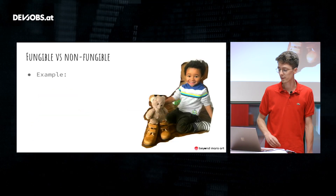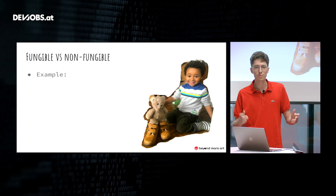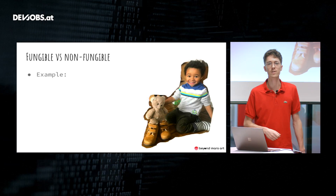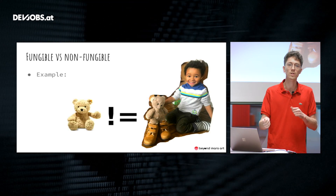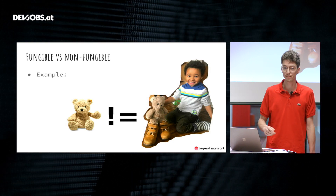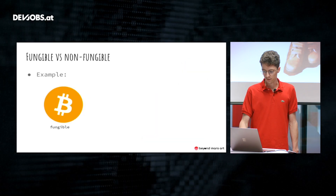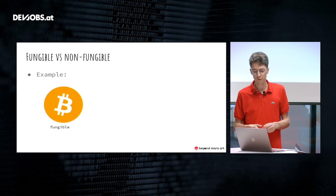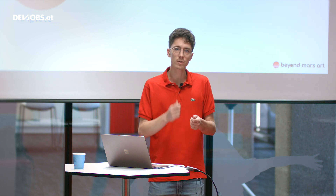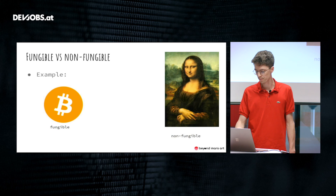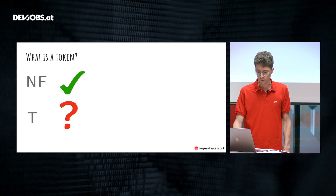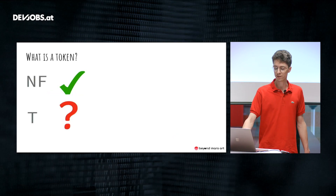Now, four years later, my son has played a lot with his teddy bear. It's gotten some wear and tear, it's become unique — non-fungible — unlike all the other teddy bears in the store. To give an example closer to the crypto world: one bitcoin is fungible, it doesn't matter which specific bitcoin you own. This is not the case for NFTs. Something like the Mona Lisa is non-fungible, non-interchangeable. So we've got the first two letters — NF — covered.